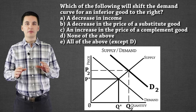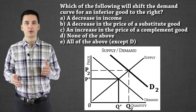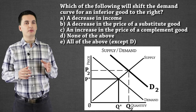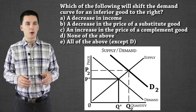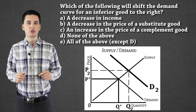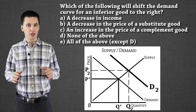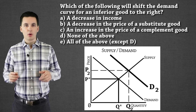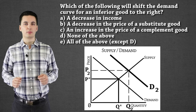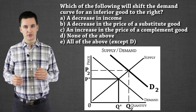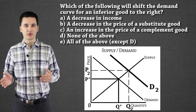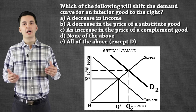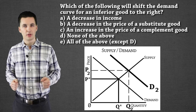For this next problem — a multiple choice question — we have: which of the following will shift the demand curve for an inferior good to the right? Remember, right means increasing — moving further away from zero. I want to know what will make an inferior good see an increase in demand. Inferior goods are cheaper goods; we see an increase in demand for them when people have less money, because if you have more money you'll buy better quality goods instead.